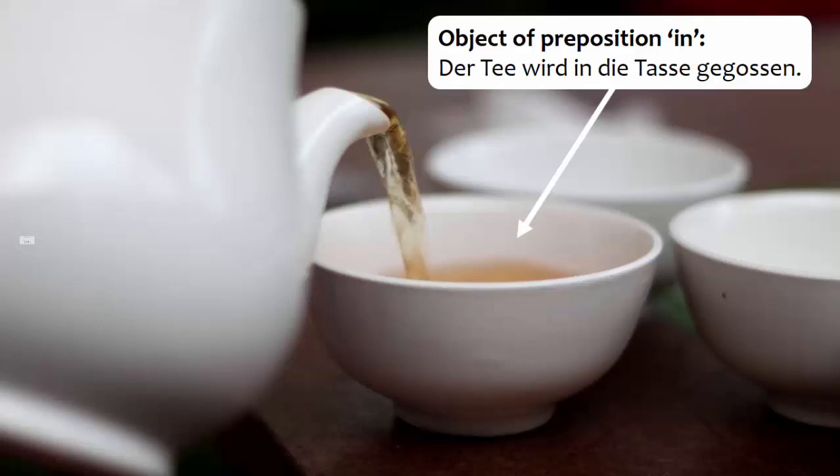Here's another example. The word In is a preposition, and the noun die Tasse goes with it. The prepositional phrase in die Tasse tells you the location and direction of the tea, namely, the tea is going into the cup.